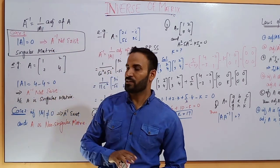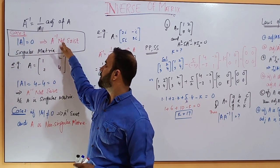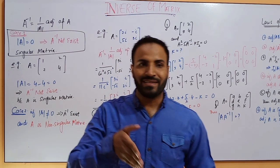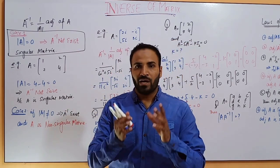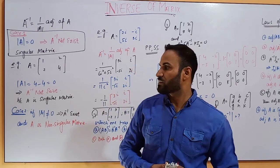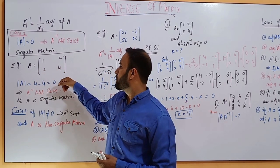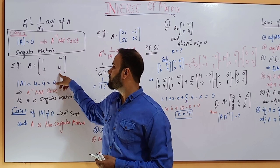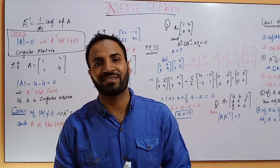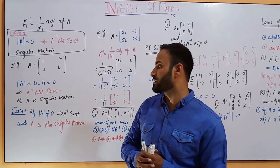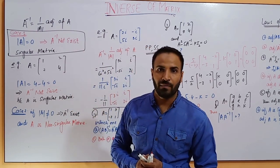We have two cases for the inverse. First, if the determinant of A equals 0, then A inverse does not exist. In this case, the matrix will be a singular matrix. Remember, when you have a singular matrix, you cannot find the inverse. For example, matrix A = [[1, 2], [2, 4]]: the determinant is 4 minus 4 = 0, so this is a singular matrix and we cannot find its inverse.